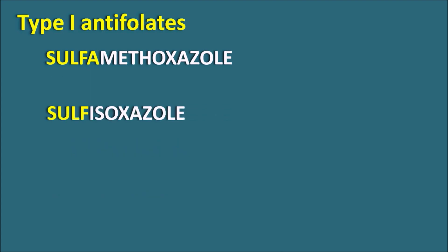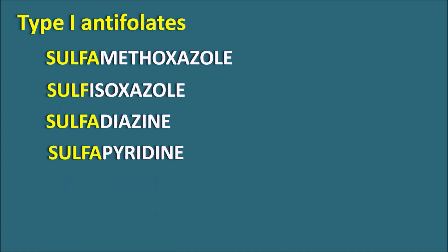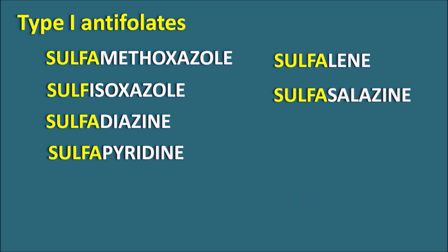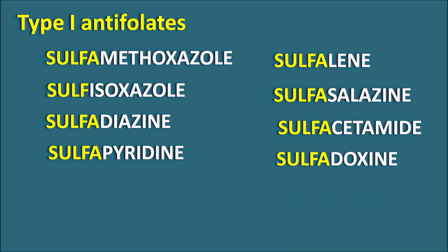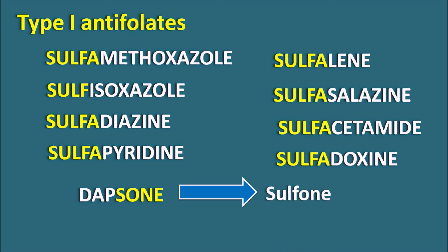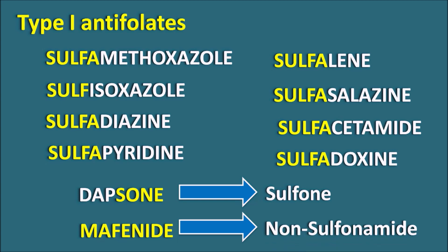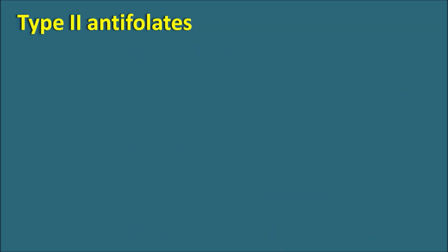Examples of sulfonamides include sulfamethoxazole, sulfisoxazole, sulfadiazine, sulfapyridine, sulfasalazine, sulfacetamide, and sulfadoxine — all having the prefix 'sulfa.' Dapsone is another Type 1 antifolate acting by a similar mechanism but is a sulfone, not a sulfonamide, and is used as an anti-leprosy agent. Mephenide is a non-true sulfonamide — not structurally a sulfonamide — but acts like one by inhibiting folic acid synthesis within bacteria.